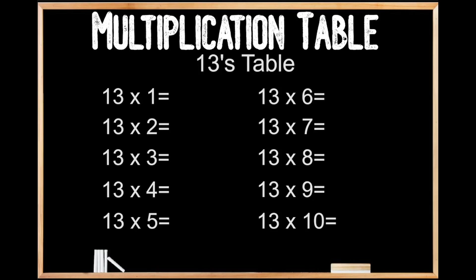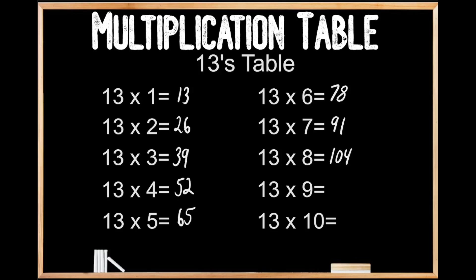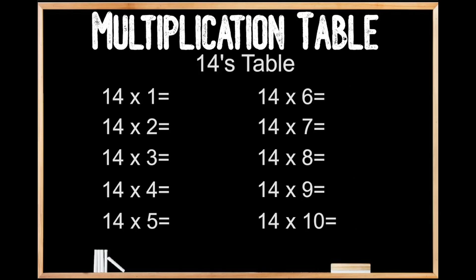13's table. 13 times 1 is 13. 13 times 2 is 26. 13 times 3 is 39. 13 times 4 is 52. 13 times 5 is 65. 13 times 6 is 78. 13 times 7 is 91. 13 times 8 is 104. 13 times 9 is 117. And 13 times 10 is 130.